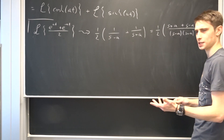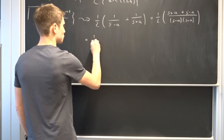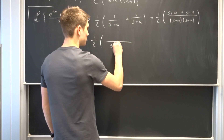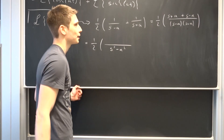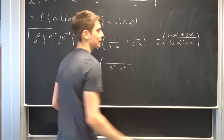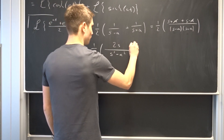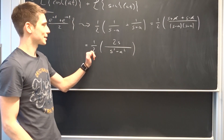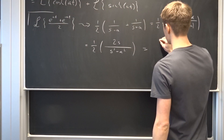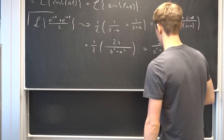The denominator is s squared minus a squared. Looking at the numerator, the a terms cancel out, leaving just 2s. So we have one half times 2s over s squared minus a squared. The one half and the two cancel out, and what we end up with is just s over s squared minus a squared.